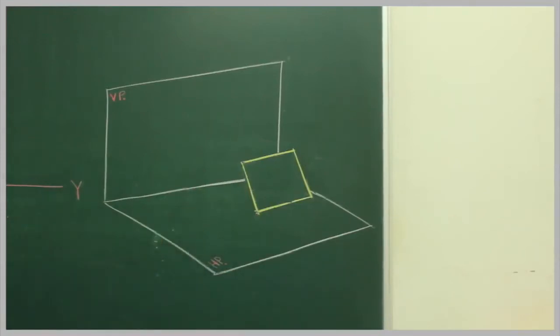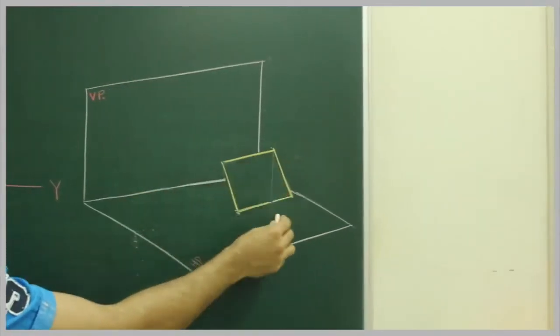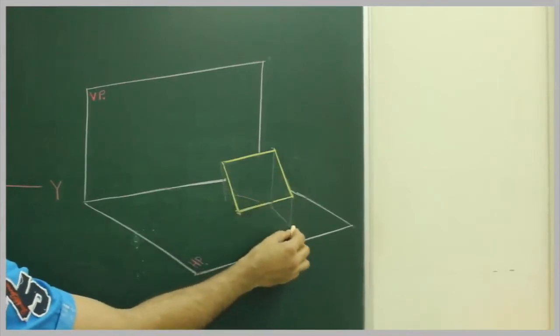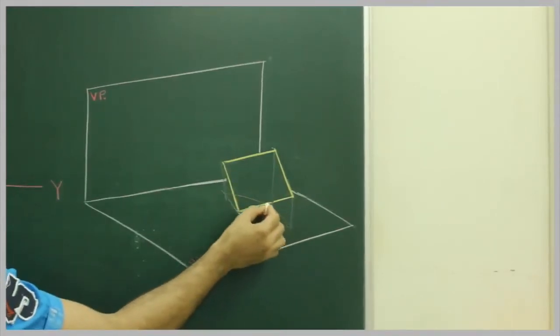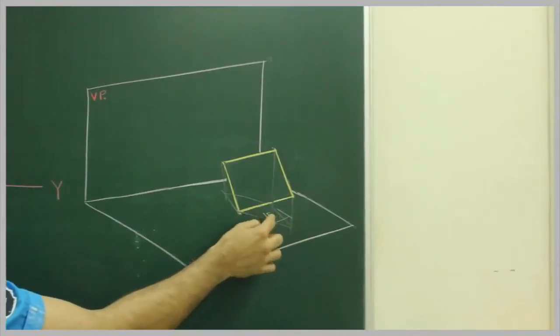They have said it is tilted in such a fashion that in top view it is seen as a rhombus with one of its diagonals as 50 mm. That means when you see from the top, let's say if I draw this, so in top view it is seen as one of its diagonals, that is this diagonal as 50 mm.